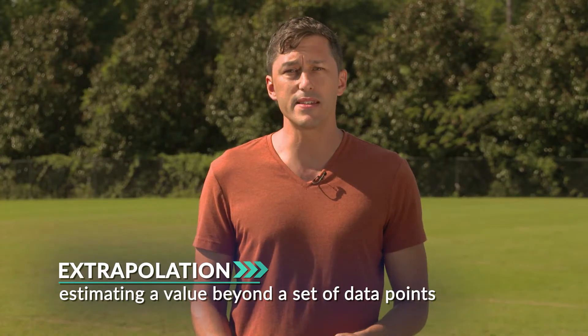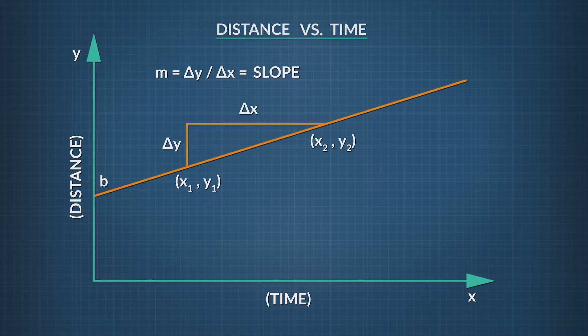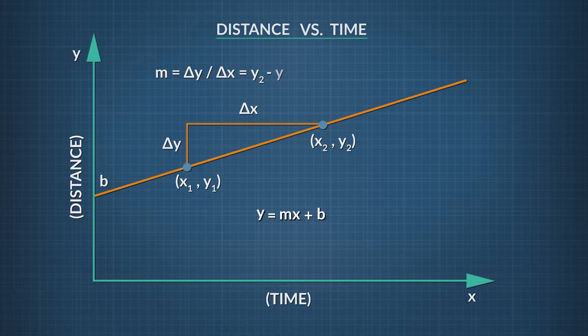Let's do another graph, this time with distance on the y-axis and time on the x-axis. Then we can talk about slope, which tells us a lot about the relationship between our variables. You can find the slope of any line, and here's how. As you learned in math class, a line has an equation: y equals mx plus b, where x and y are your coordinates, m is the slope of the line, and b is your y-intercept — the point where your graph crosses the y-axis. To find the slope, find two points on your line and then find the difference in the y values divided by the difference in the x values, or y2 minus y1 divided by x2 minus x1.